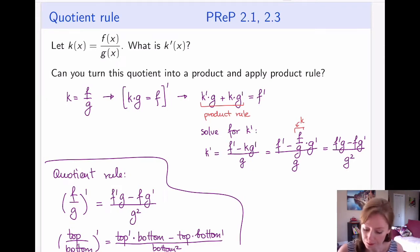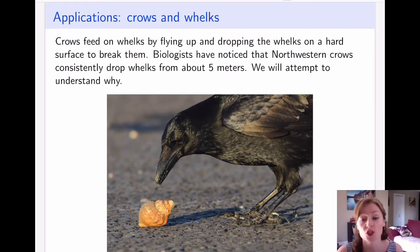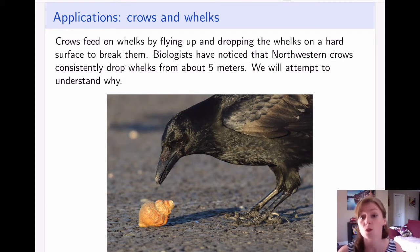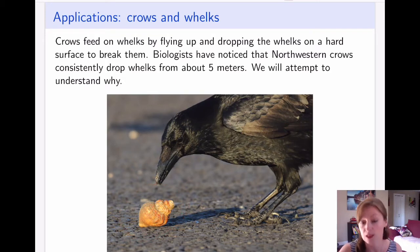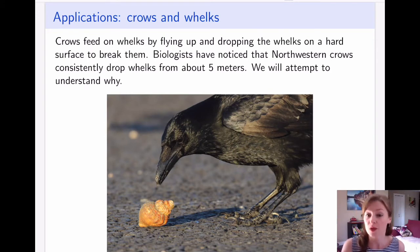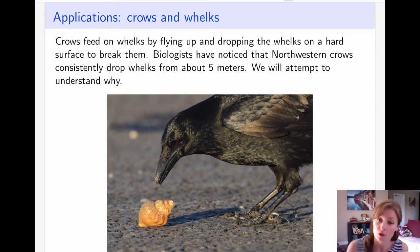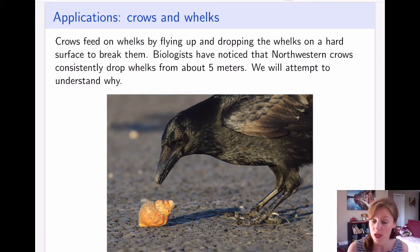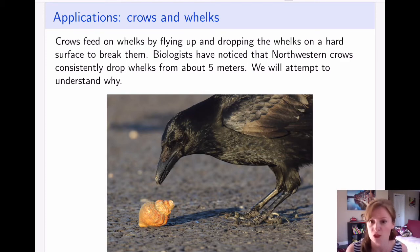Now let's try this in applications. One of the most astonishing applications of this course is the application of crows and whelks. These are northwestern crows — the ones that live in our region and down in Washington in the United States. They feed on whelks, which are essentially little mollusks in a shell. To break the shell, crows drop the whelk onto rocky parts of the beach. If it doesn't break, the crow picks it up, flies up, and drops it again. Biologists noticed that crows consistently drop whelks from about five meters of height — never too low, never too high — and the biologist asks: why?